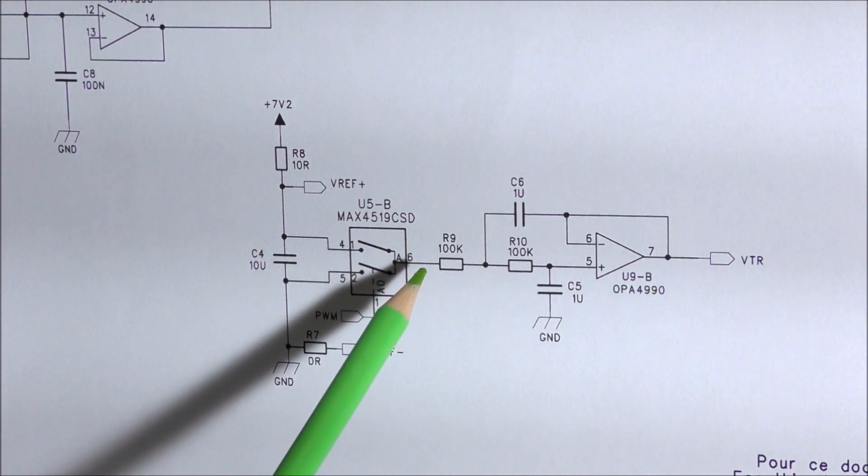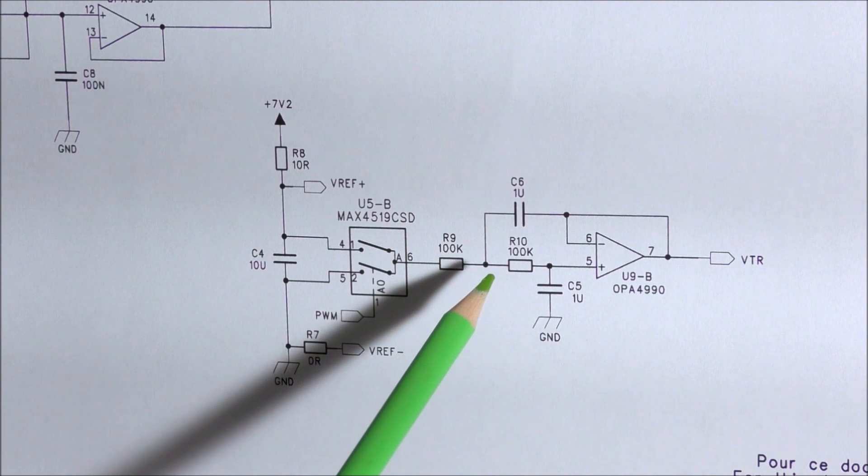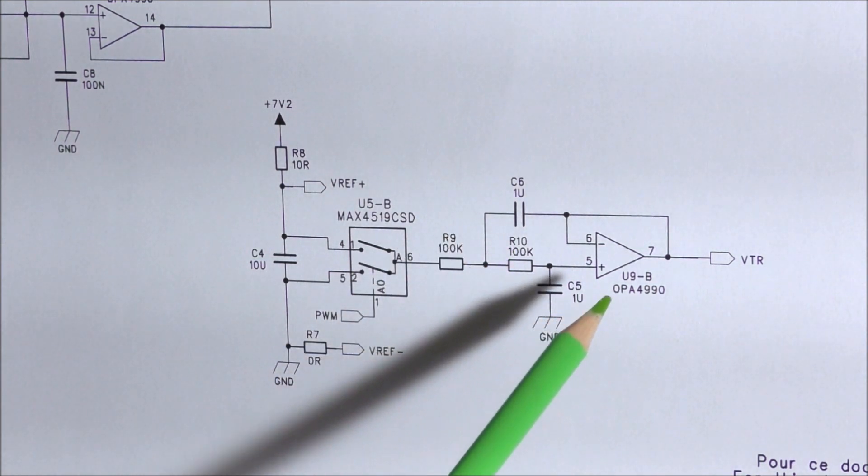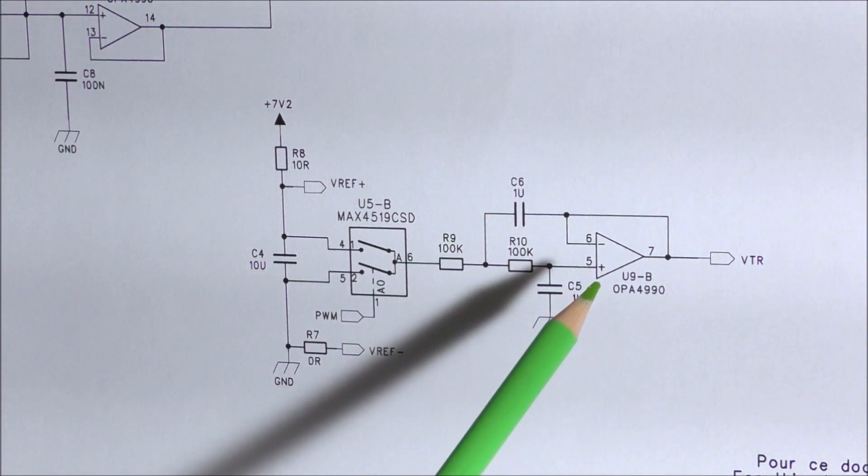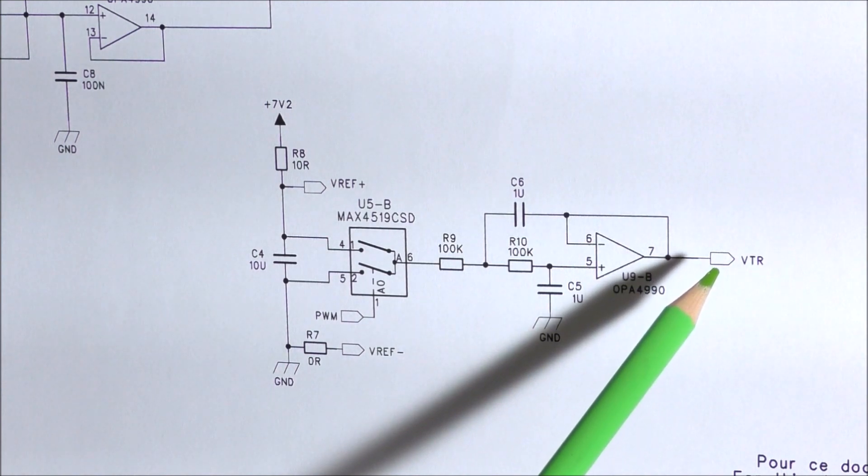And this signal is fed to a second order low-pass filter, which uses these two resistors, these two capacitors, and also this op-amp here. And this signal is fed to the servo control, which permits to set the total temperature probe resistance.